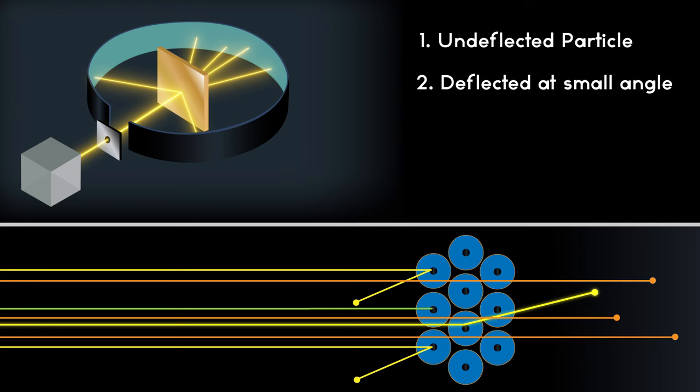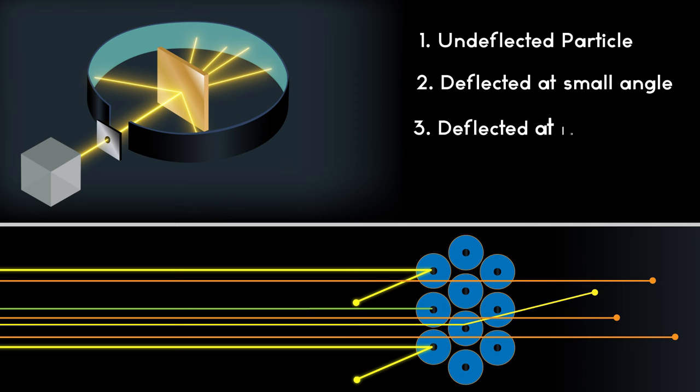2. Some alpha particles were deflected at small angles. 3. Some alpha particles were deflected at large angles.